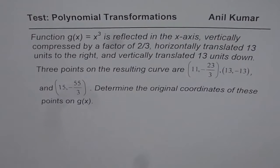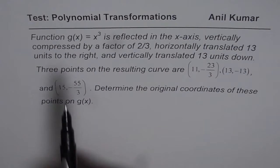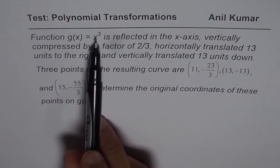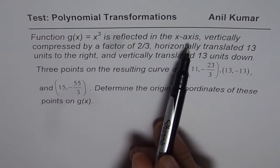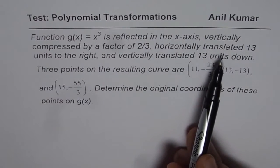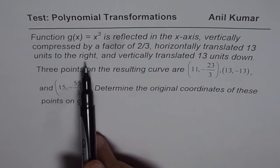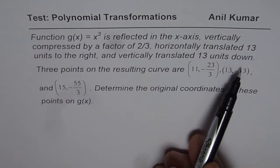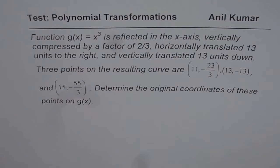Here is my copy of this question. We have written that g(x) = x³ is reflected in the x-axis, vertically compressed by a factor of 2/3, horizontally translated 13 units to the right, and vertically translated 13 units down. Three points on the resulting curve are (11, -23/3), (13, -13), and (15, -55/3). Determine the original coordinates of these points on g(x).